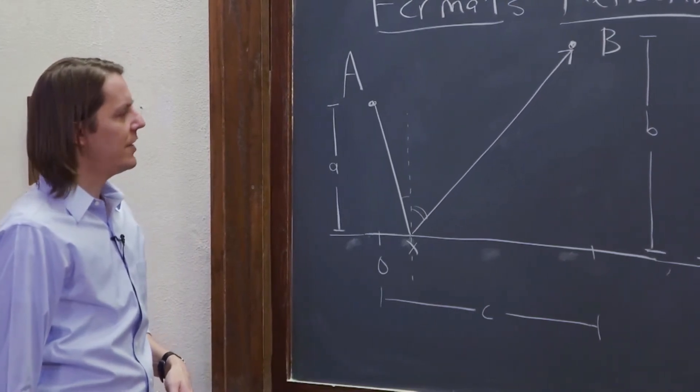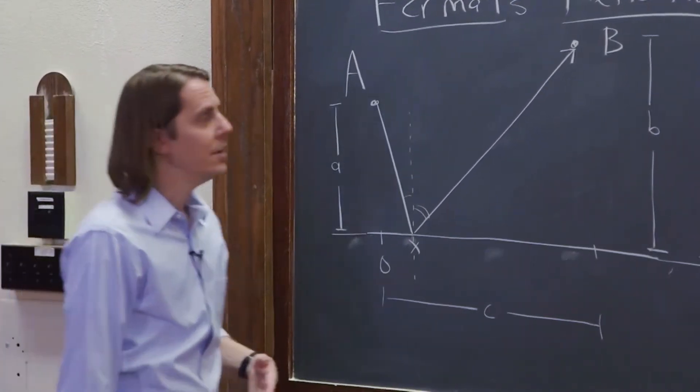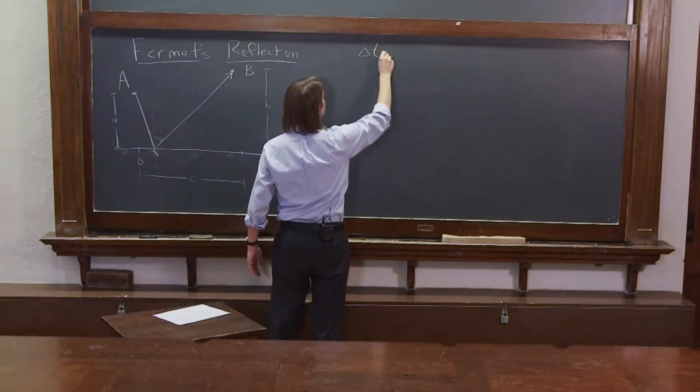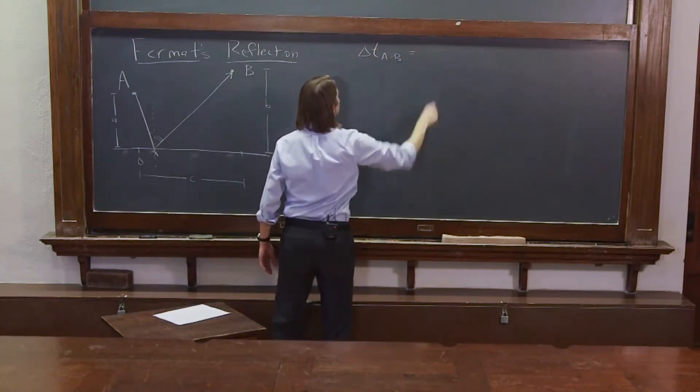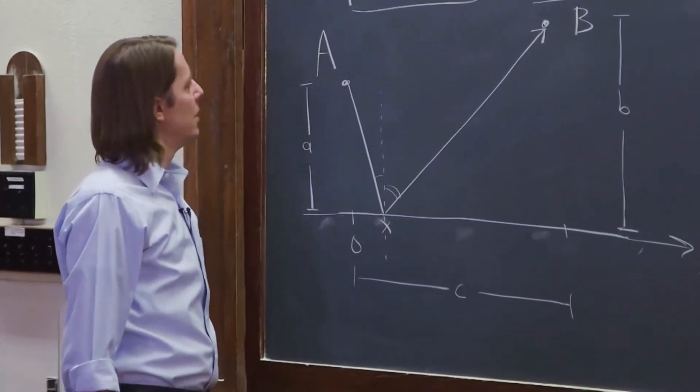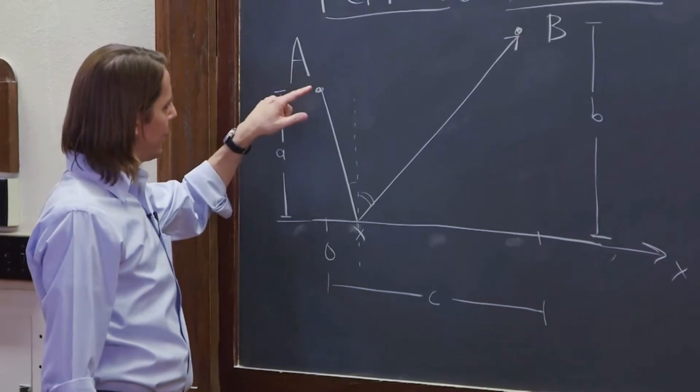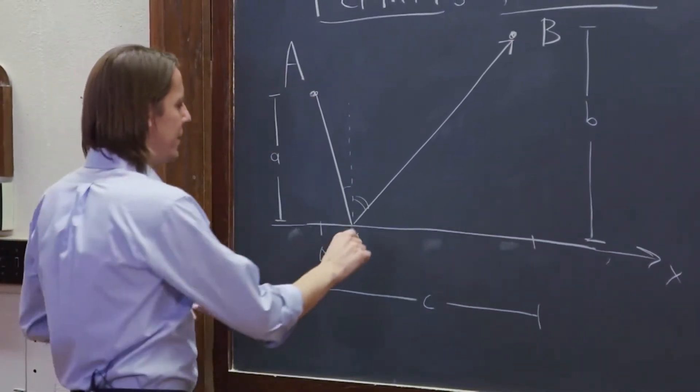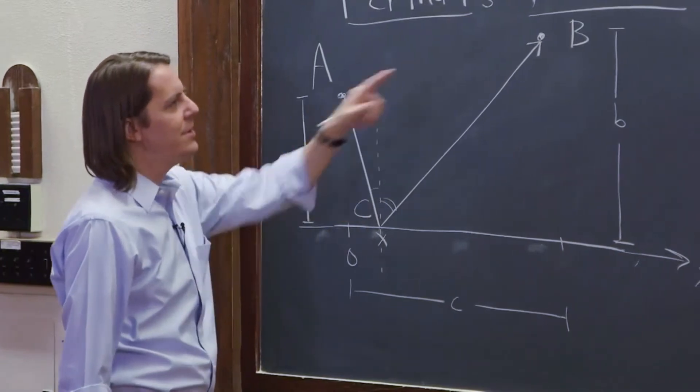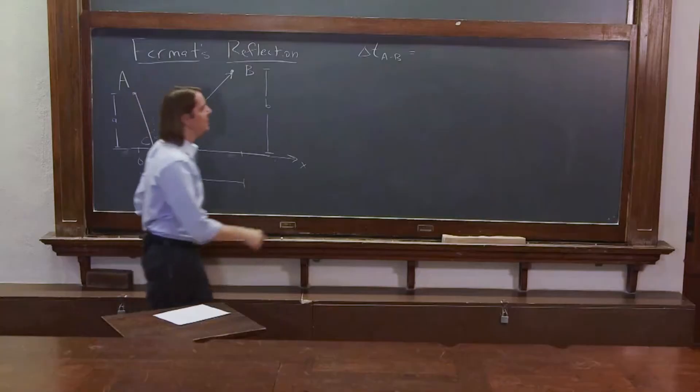Well, if it's going to take the least time, let's calculate the time. So what we really care about is delta T from A to B. That's going to be from A to this point, which we probably need to give it a name, so it's easier to keep up with. So from A to C, and from C to B. But if we want the time, we divide those distances by the speed.